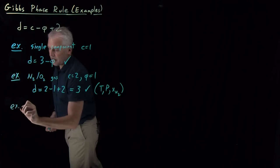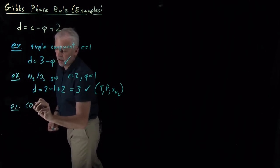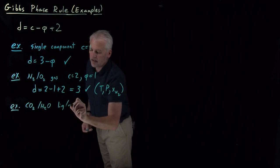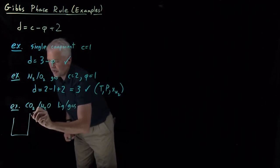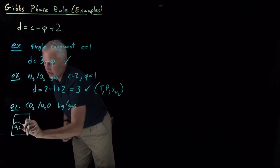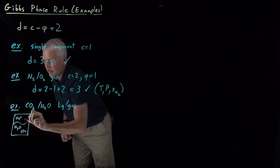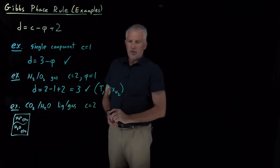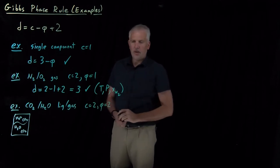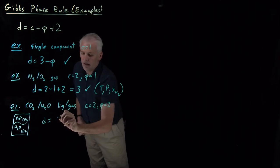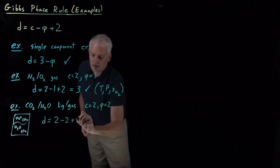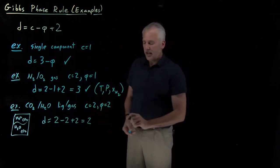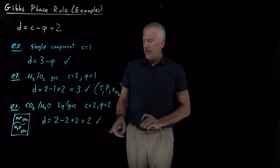The other example from the previous lecture was carbonated water — a mixture of CO2 and H2O in the liquid and gas phases coexisting. The picture we drew was liquid water with dissolved CO2, and both water and CO2 in the gas phase. That's again a two-component system (CO2 and H2O) with two phases coexisting.